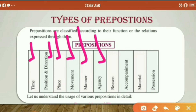Then there is agency — meaning who is causing the action. That is told by prepositions of agency. Then prepositions of reason — for example, 'because of': 'She died because of corona.' So it states the reason. Then prepositions of accompaniment, which tell who is accompanying someone or something.